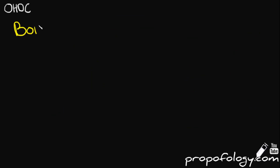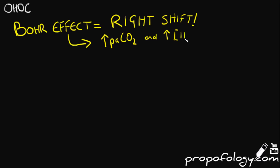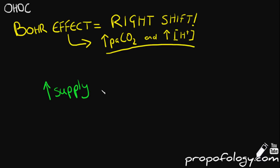The Bohr effect describes the right shift in the oxygen haemoglobin dissociation curve — favouring oxygen dissociation — where there is an increased PCO2 or hydrogen ion concentration in the blood. The Bohr effect enables the body to adapt to changing conditions and supply extra oxygen to tissues that need it most. For example, when muscles are undergoing strenuous activity, they require large amounts of oxygen for cellular respiration, which generates CO2 and therefore hydrogen carbonate and hydrogen ions as by-products. These waste products lower the pH of the blood, which increases oxygen delivery to the active muscles.